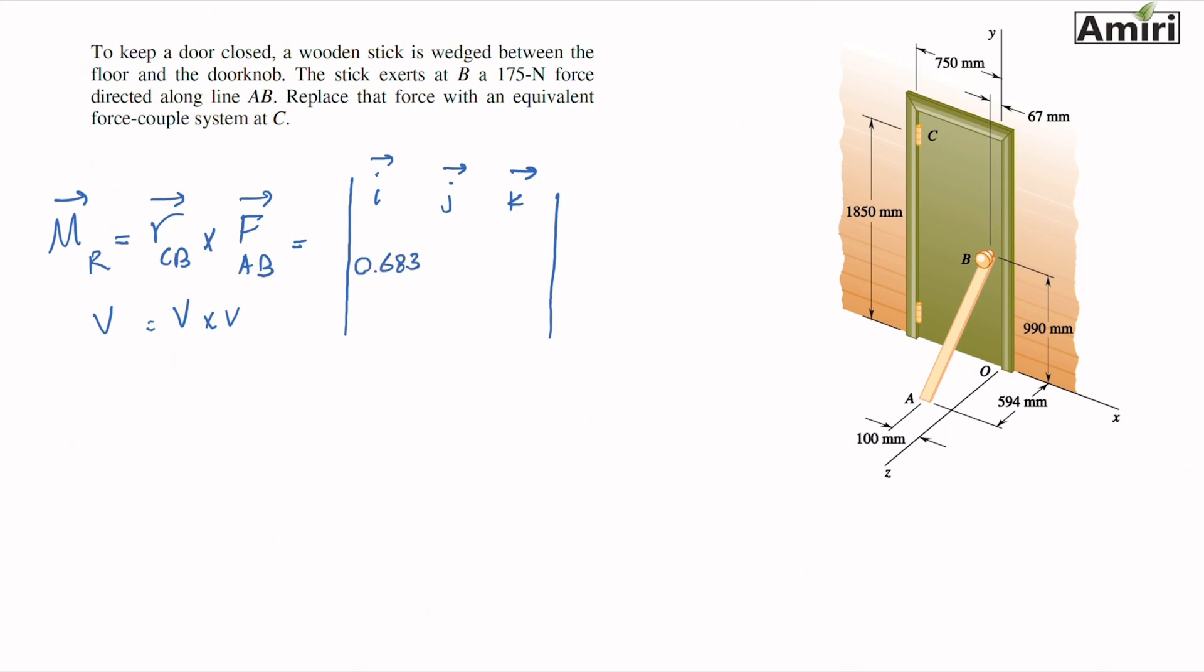Components of RCB go here: 0.683, minus 0.860, and then k is 0. You see what I did there - I converted the units to meters, because I eventually like to have it in newton meters. You can have it in newton millimeters, there's nothing wrong with that, I just prefer to convert it to meters. And then components of F go on the bottom, which was 5i, 150j, and minus 90k. The units go next to it.